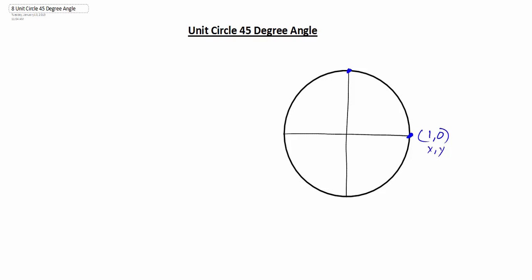That means the point at the top of the circle must be (0, 1), and over here on the left-hand side we would have (-1, 0), and the bottom of the circle would be (0, -1). So there's our unit circle, and we're going to start exploring this with different angles.